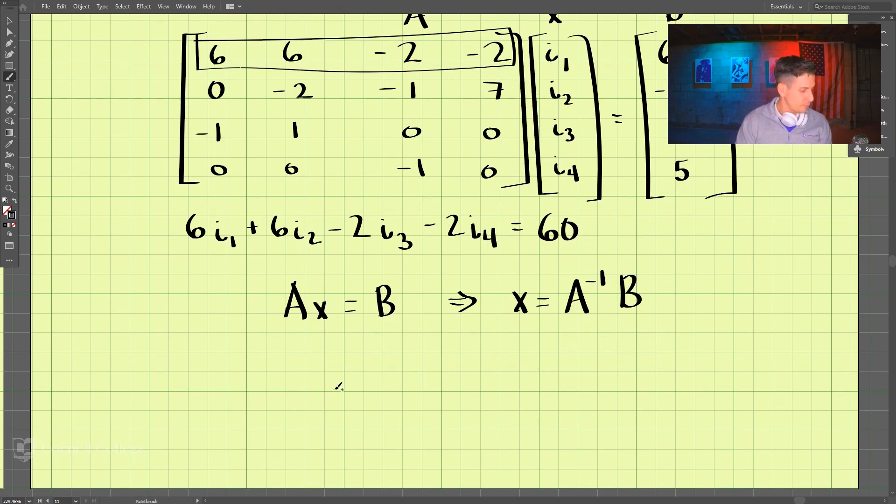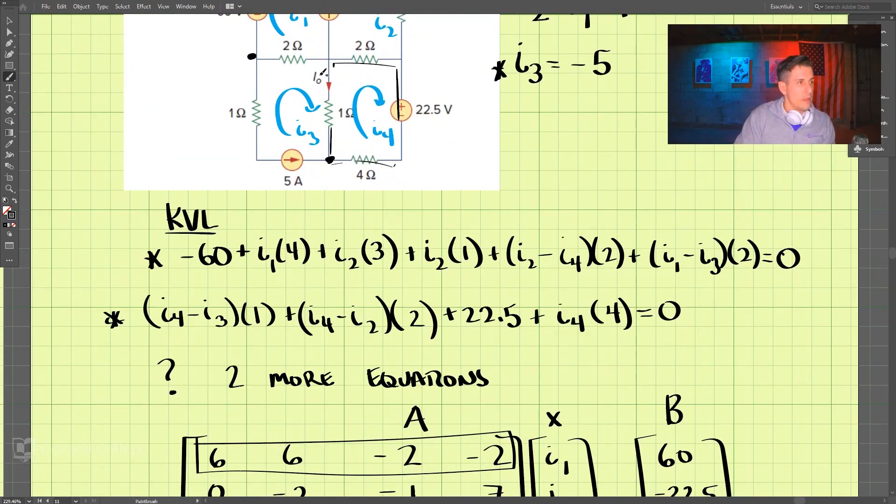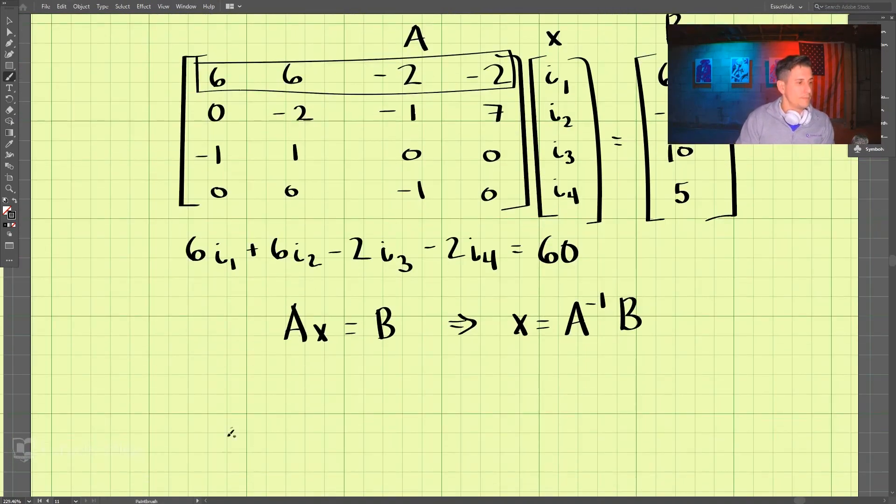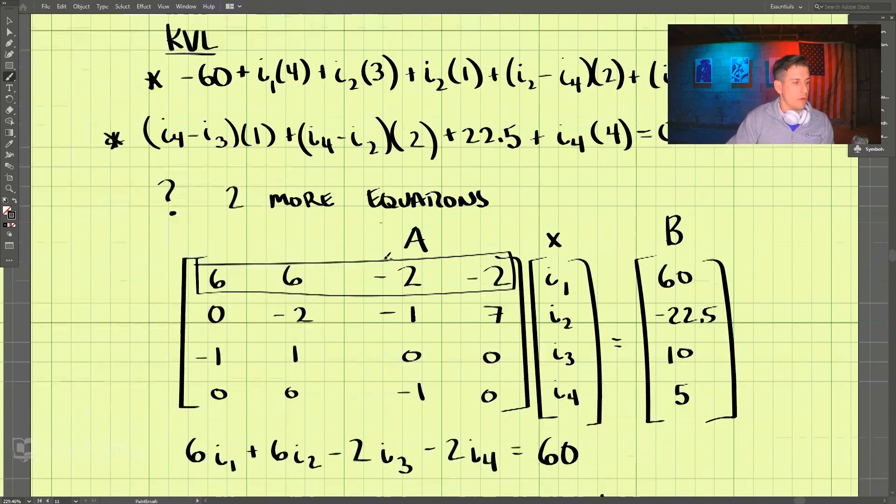So we can solve this equation here, and through this we can get our values. So we have, for example, I0—let's go back up—this I0 here, I0 is equal to I3 minus I4.